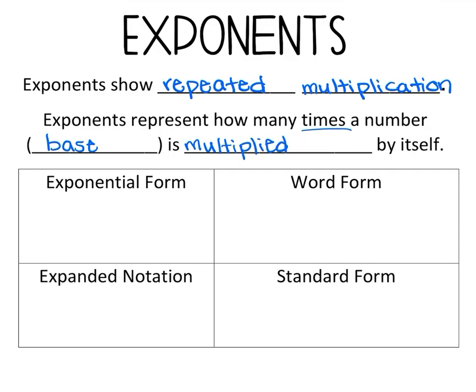So what that means, let's go down here and we'll do an example. So if I have exponential form, that means if I have a big 2 and a little 4. The big number on the bottom is called our base.